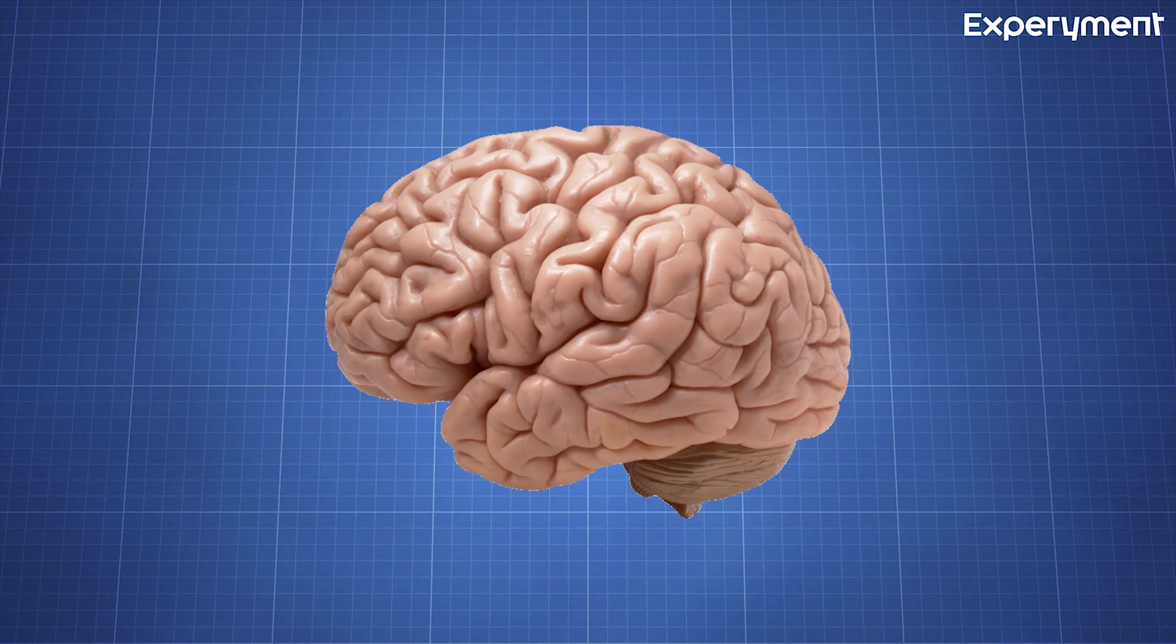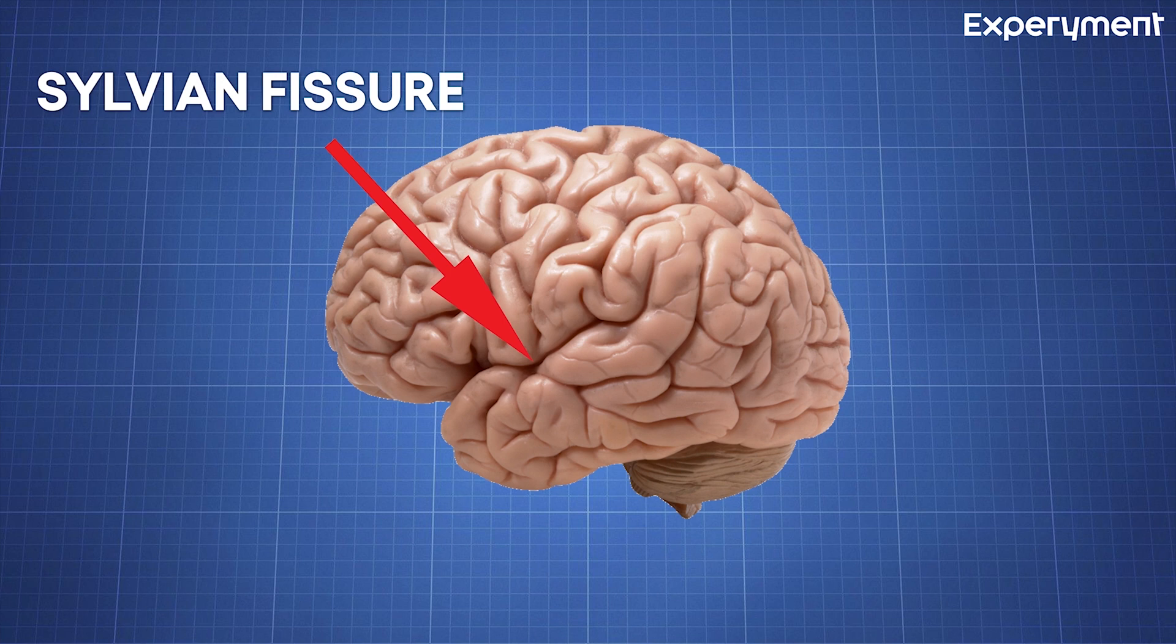Let's now see where the areas responsible for the language activities are located and what they actually do. The primary language areas are arrayed along the sylvian fissure of the dominant hemisphere.